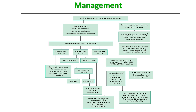For complex cysts on transabdominal ultrasound — arrange tumor markers and MRI. If results are within normal limits and there is no suspicion of cancer: if symptomatic and more than 5 cm, consider laparoscopic cystectomy. If there is suspicion of cancer, refer to the gynecology and oncology multidisciplinary team. All children and young girls should be followed up after surgery to discuss findings and implications on future fertility.